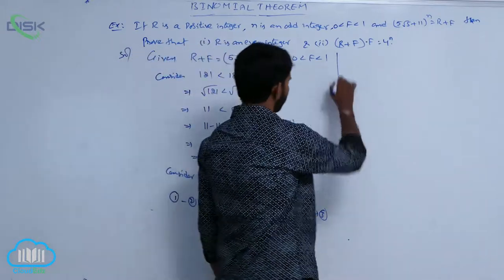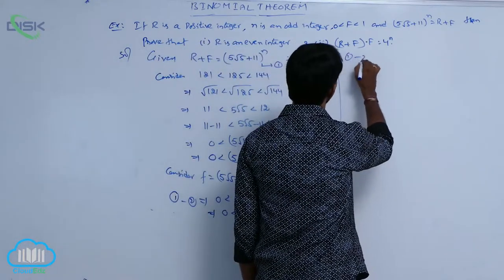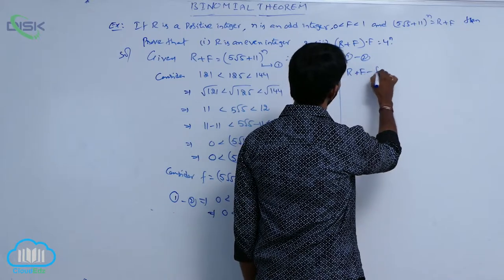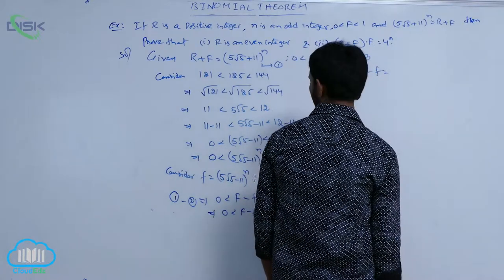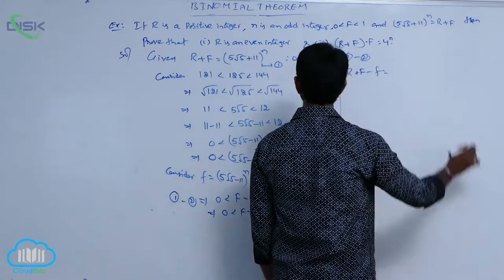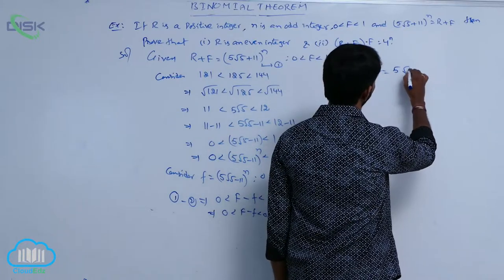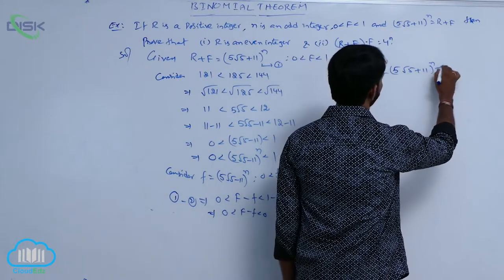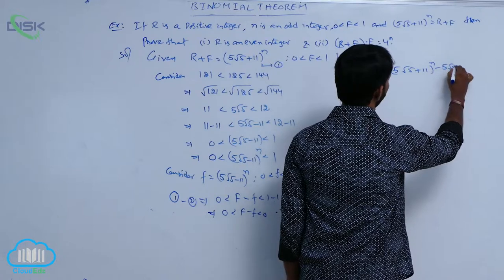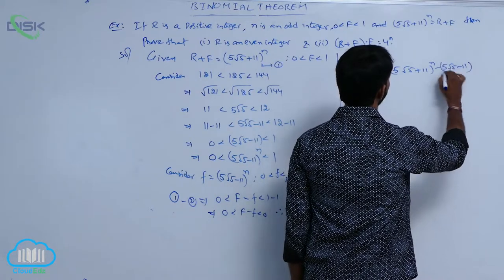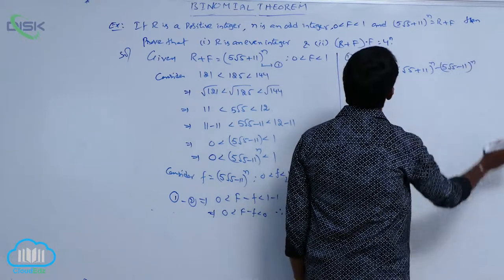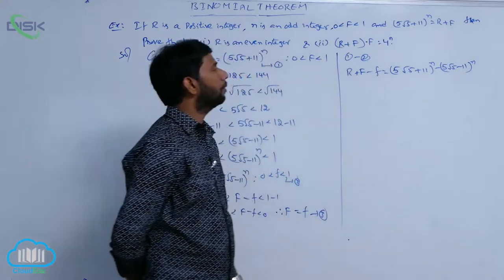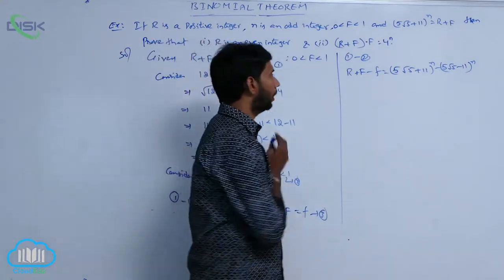From conditions 1 minus 2: R + F − f = (5√5 + 11)^n − (5√5 − 11)^n. Now expand using the binomial theorem.